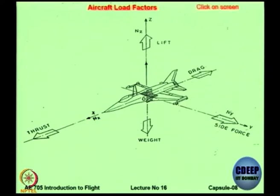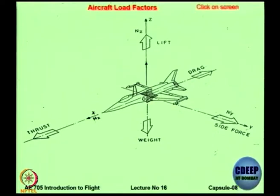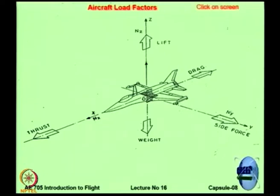You will have lift acting on the wings plus or minus lift acting on the tail — mostly it will be plus lift because the tail has down load. That divided by aircraft weight gives Nz, the vertical load factor. And if there is a turn with acceleration, there will also be a side force; that side force divided by aircraft weight gives Ny. So an aircraft typically has three load factors: Nx, Nz, and Ny. The load factor is the net external force acting on the aircraft — except the weight — divided by the weight.